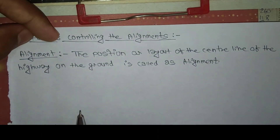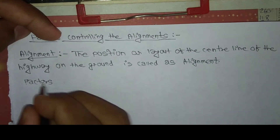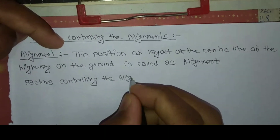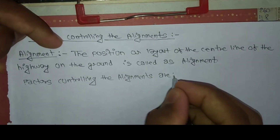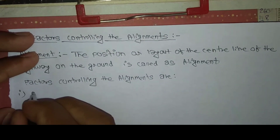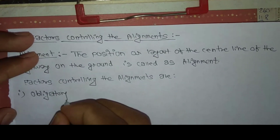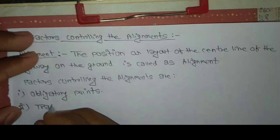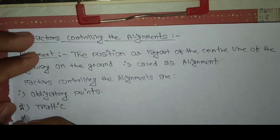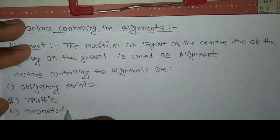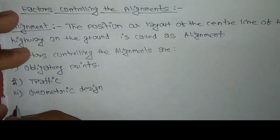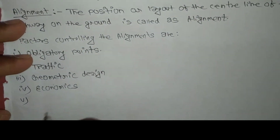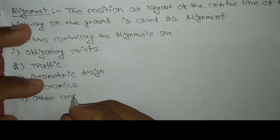The factors controlling the alignments are: first, obligatory points; second, traffic; third, geometric design; fourth, economics; and fifth, other considerations.